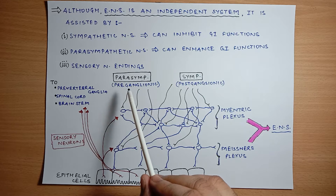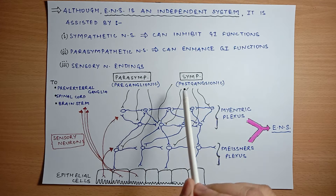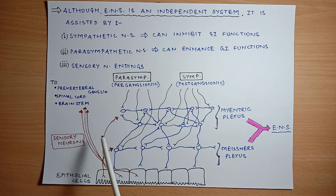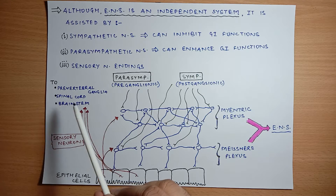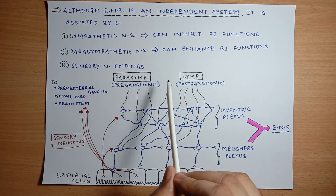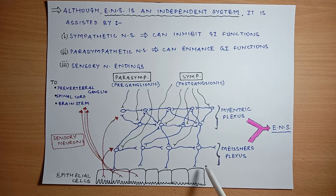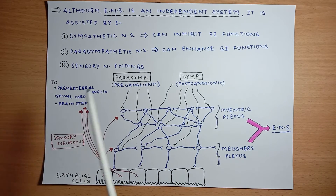The parasympathetic nervous system's pre-ganglionic nerves can enhance ENS functions, while the sympathetic nervous system's post-ganglionic neurons can inhibit these functions. Sensory neurons transmit sensory signals from epithelial cells to the myenteric and Meissner's plexuses, and further up to the pre-vertebral ganglia, spinal cord, and brain stem. In this video, we will study in detail how sympathetic, parasympathetic, and sensory neurons affect the enteric nervous system.